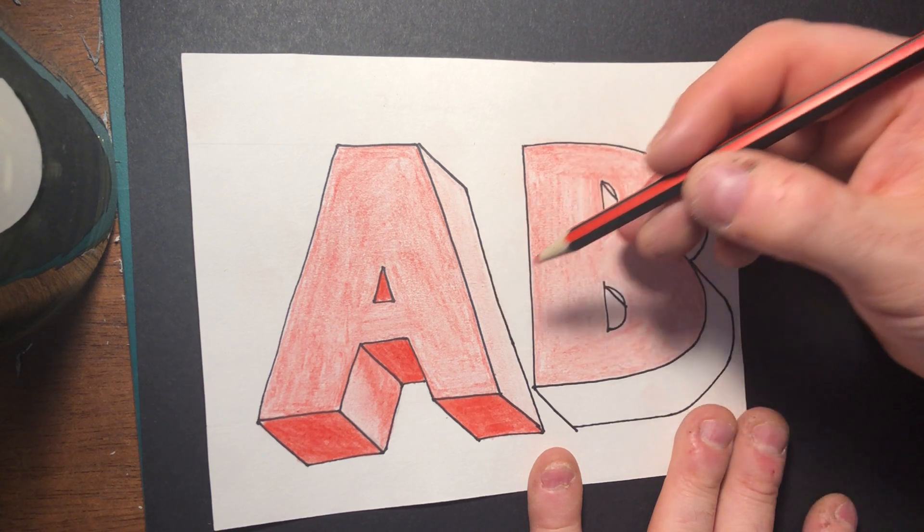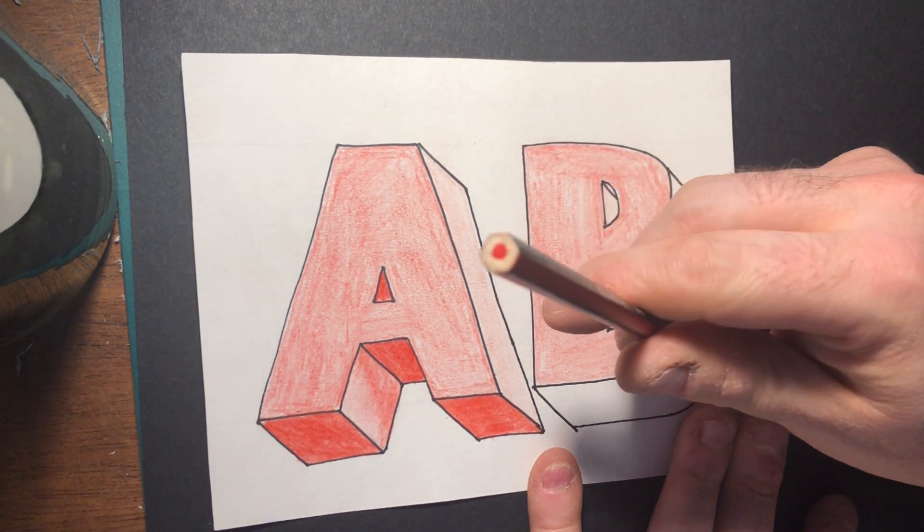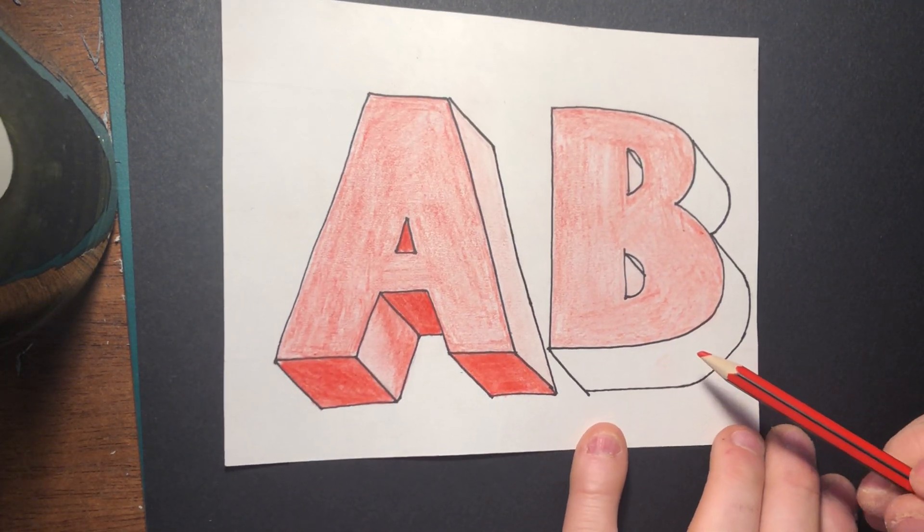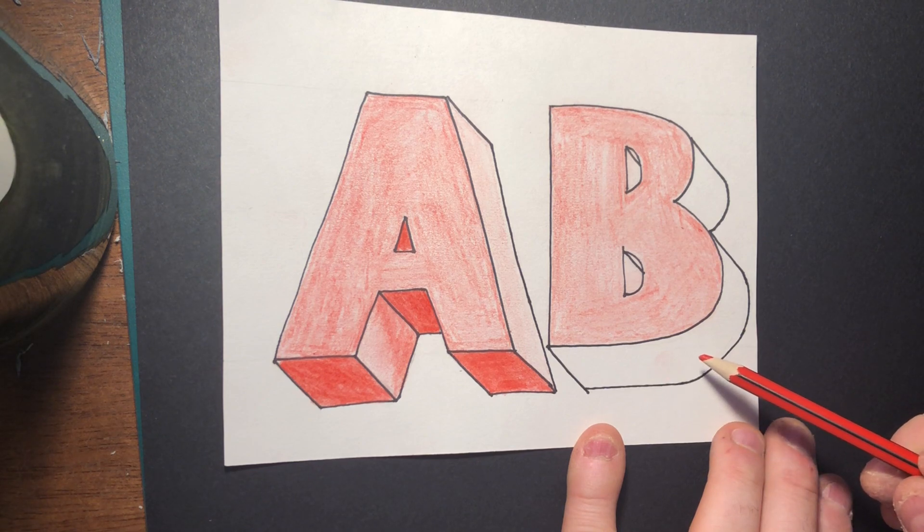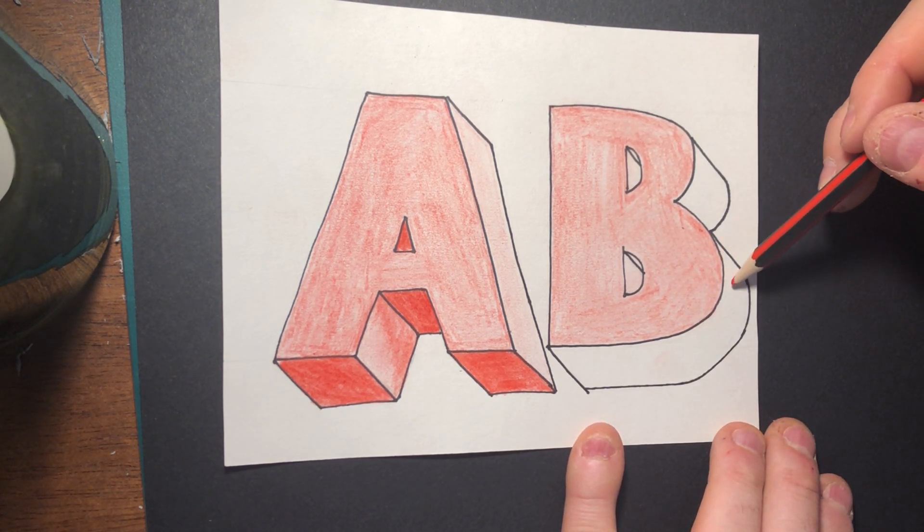Now I said that the light is coming from this side here, so it's shining down. So this edge here on the A is the lightest. On the B you've got to remember that they've got a curve, so there will be parts of the bottom, like for example at the bottom here, that will be dark, and then there'll be parts here that are very light.